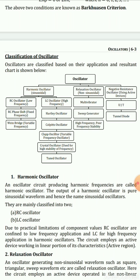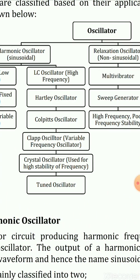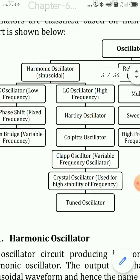Under harmonic oscillators, the first subcategory is RC oscillators: the RC phase shift oscillator, which is a low-frequency oscillator, and the Wien bridge oscillator, which is a variable-frequency oscillator. The second subcategory is LC oscillators for high frequency, including Hartley oscillator, Colpitts oscillator, Clapp oscillator, crystal oscillator, and others. All these harmonic oscillators will be studied in detail in this chapter as they are part of our syllabus.